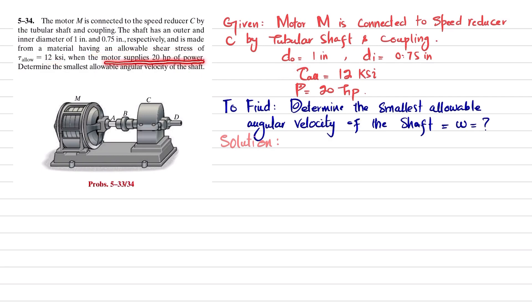Determine the smallest allowable angular velocity of the shaft. So you have to find the smallest angular velocity of the shaft. Let's start with the solution. As we know, power is equal to torque into angular speed. So from here we have angular velocity is equal to power divided by torque.